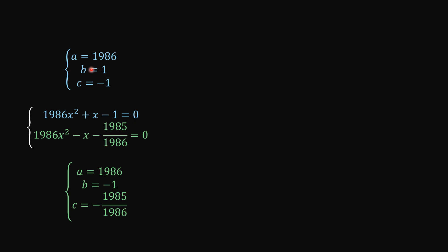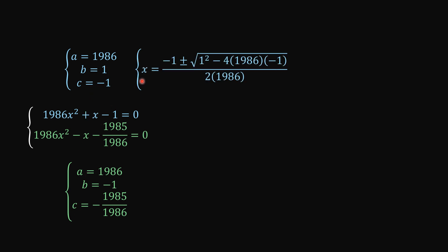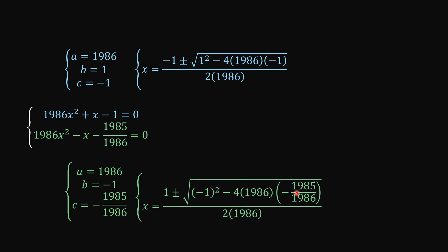Applying the quadratic formula to both equations — starting from the first one, we have x equals negative B plus or minus the square root of B squared minus 4AC over 2A. Doing the same thing for the second equation, we have this one here. You know that we're going to cancel this one and this one here.